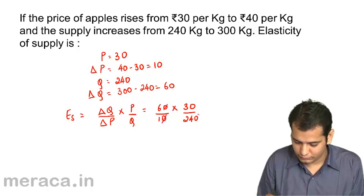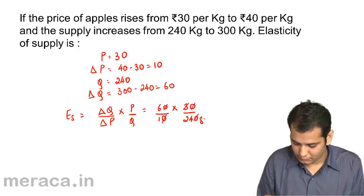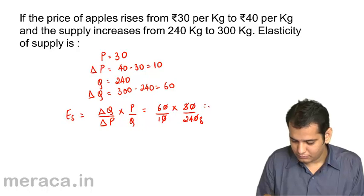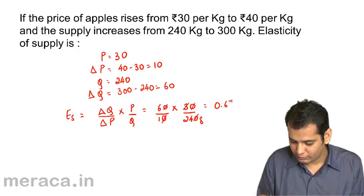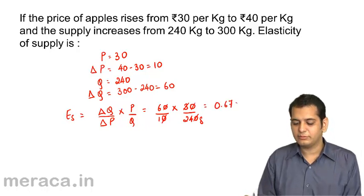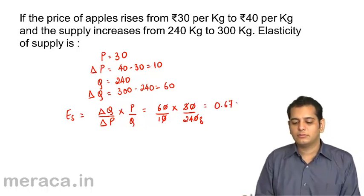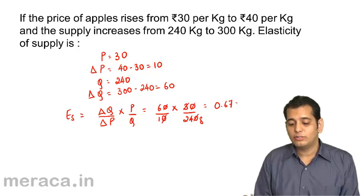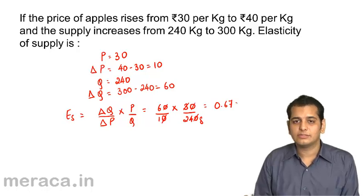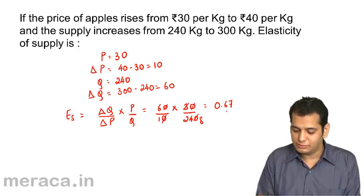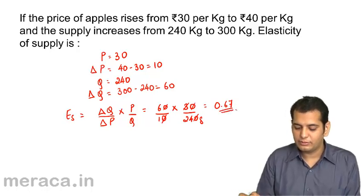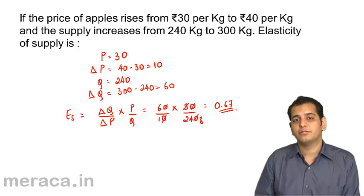After cancellation, this equals 0.75. So the elasticity of supply is 0.75 here.